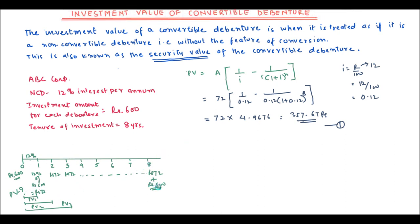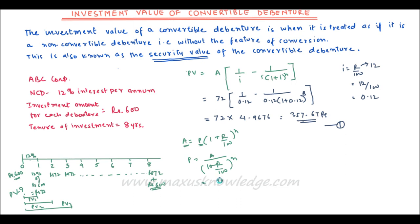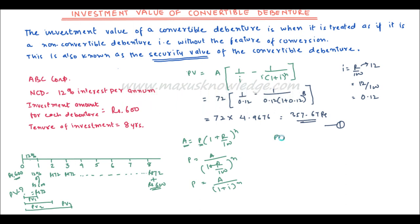Now we find the present value of the Rs. 600 we receive after 8 years. Using the compound interest formula — Amount = Principal × (1 + R/100)^N — the future value is the amount received and the present value is what we invested. Therefore, Present Value = Future Value / (1 + i)^N.